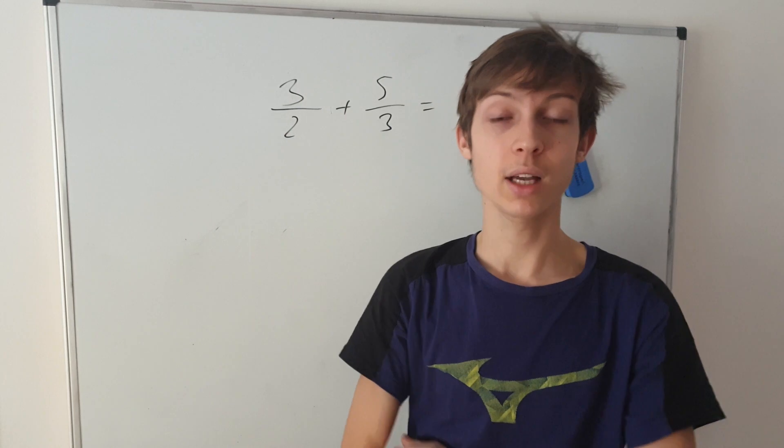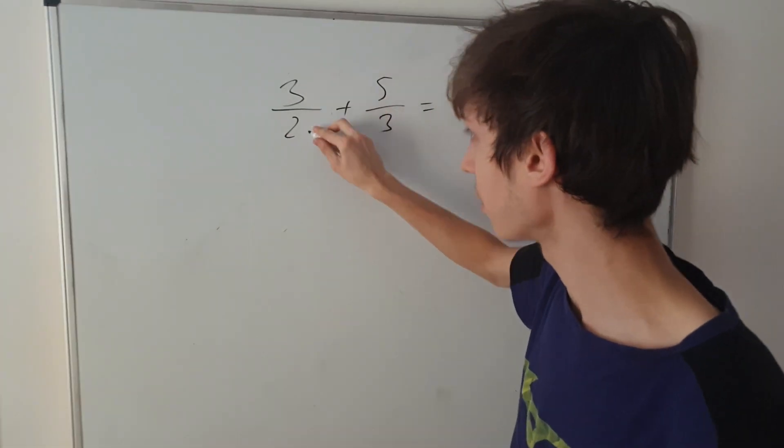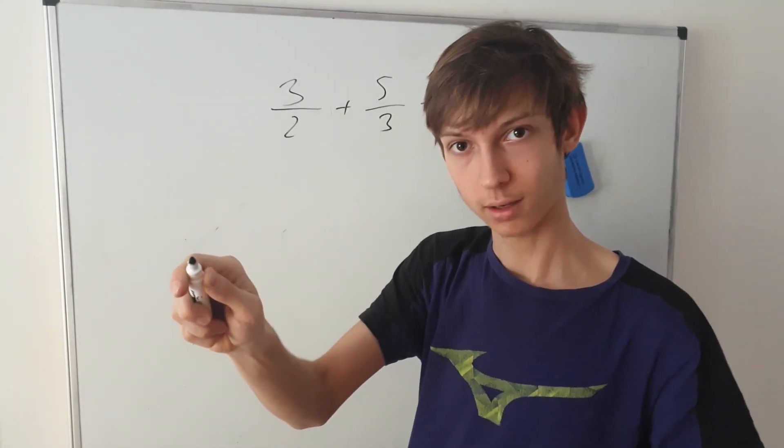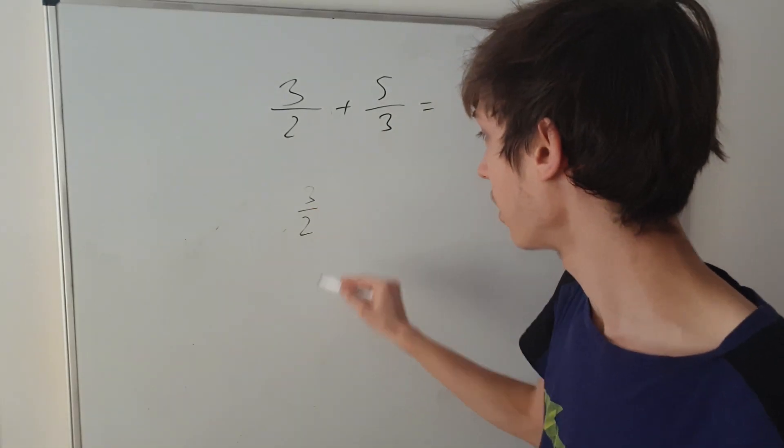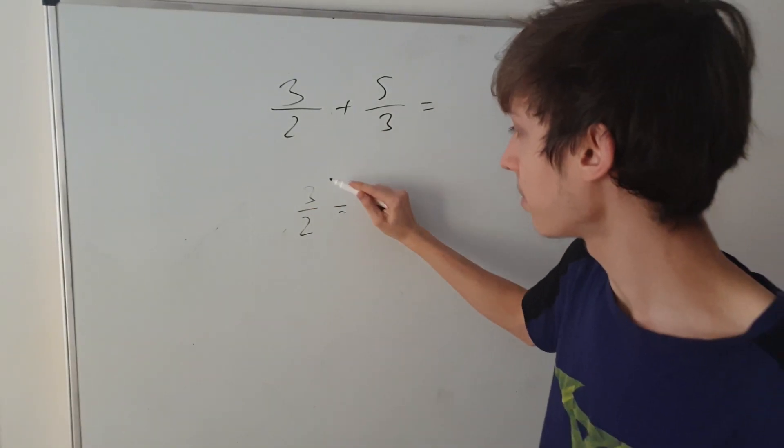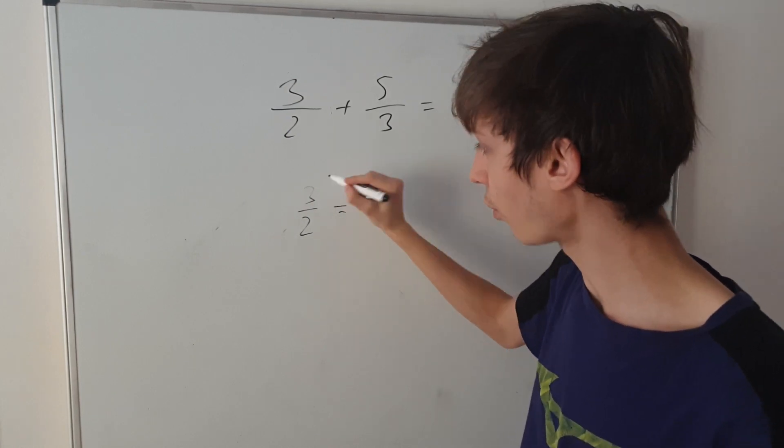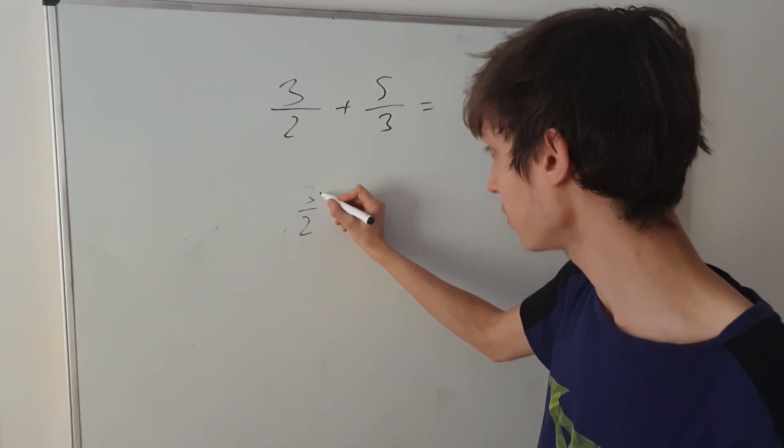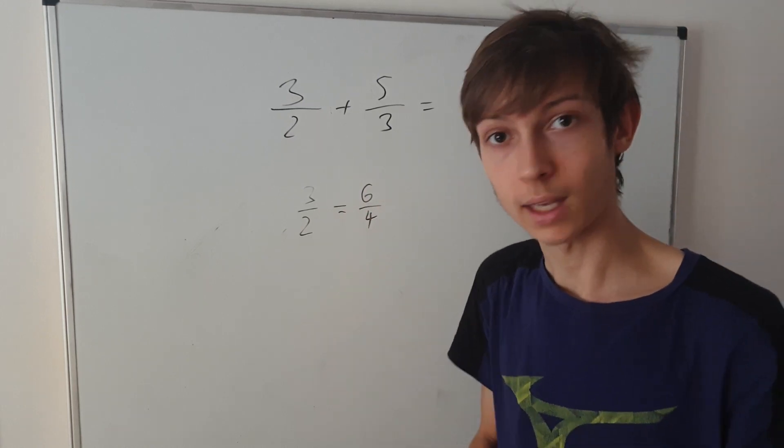What can you do to a fraction? You can multiply both the upper value or the upper number and the lower number by the same number, okay? That's what you can do to a fraction. When you have three halves, you can multiply, that means basically the quotient 3 over 2 or 3 divided by 2, okay? But that will be the exact same as if we multiply this by 2 and this by 2, so 6 over 4.